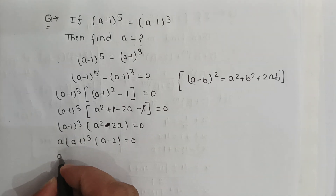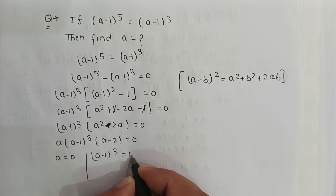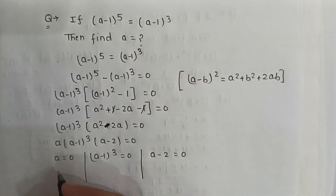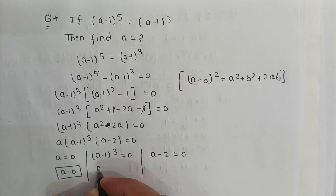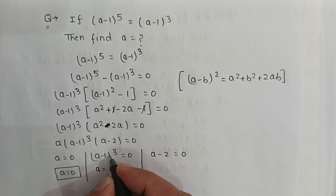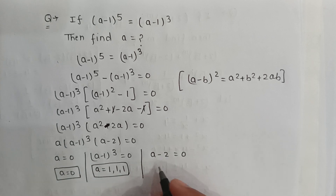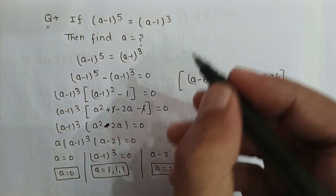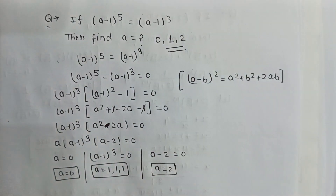So here, a is equal to 0. And from (a minus 1) to the power 3 equal to 0, we get a is equal to 1. And from (a minus 2) equal to 0, a is equal to 2. So the values of a will be 0, 1, and 2, and this is our answer.